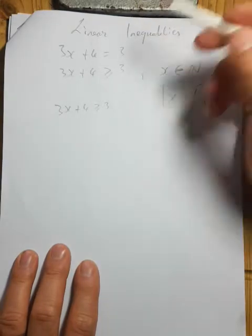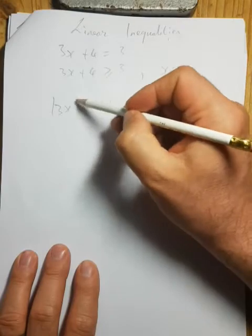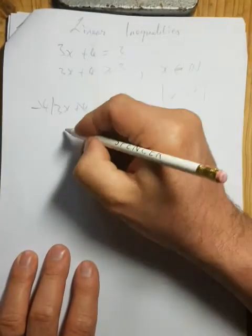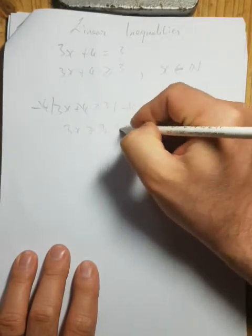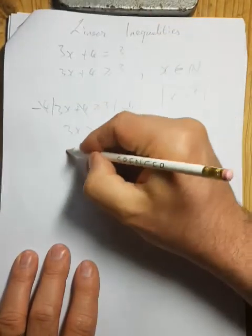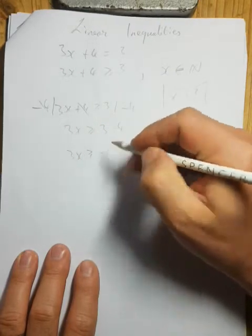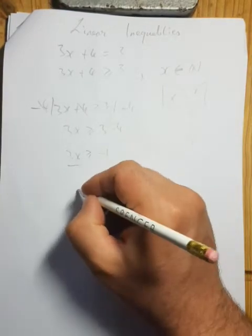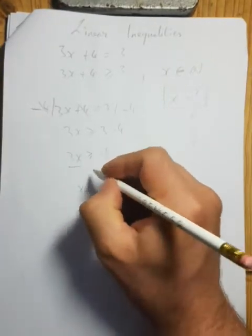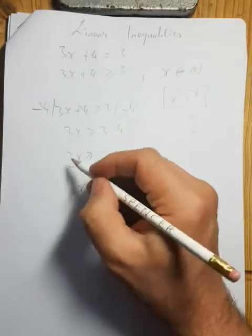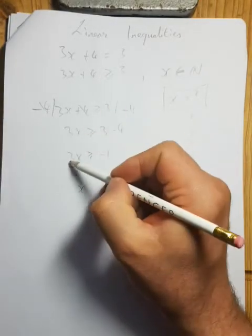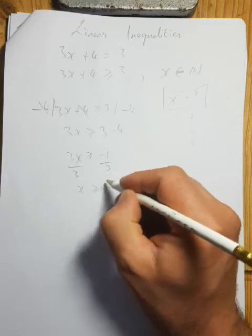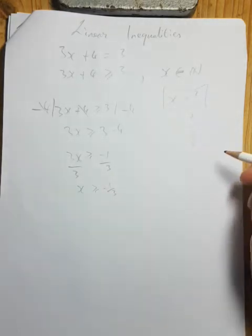First, get rid of the 4 on the left hand side — do the opposite, so minus 4 from both sides. 4 minus 4 is 0, so 3x is greater than or equal to 3 minus 4, which is minus 1. Now I don't want 3x, I want 1x, so I divide by 3. Our final answer is x is greater than or equal to minus one third.